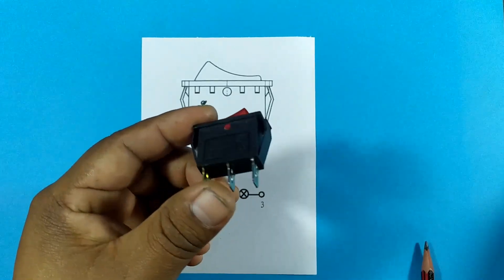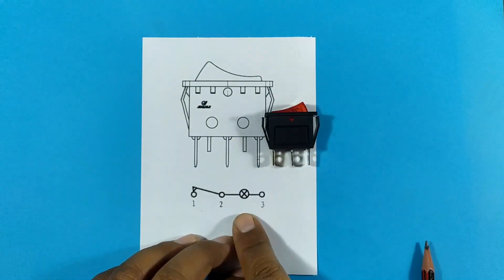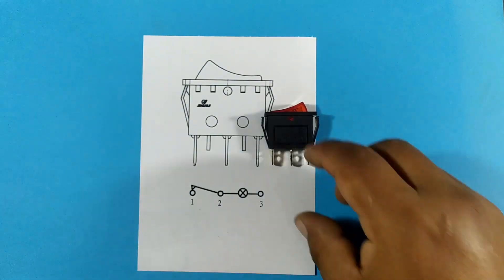Now to make the connections with this switch, the only thing we have to do is look at its connection diagram, which is in your data sheet. This diagram will show us how the pins are connected.